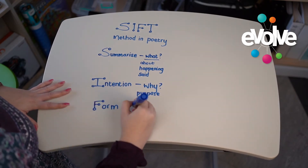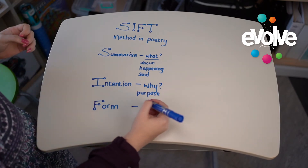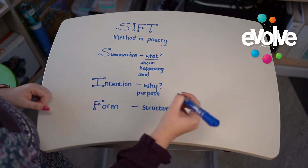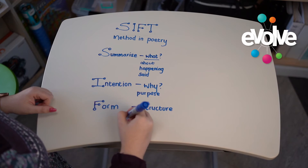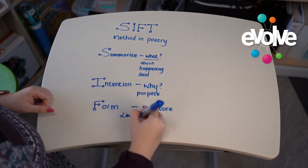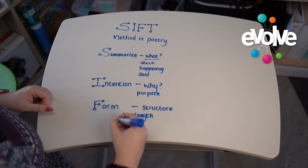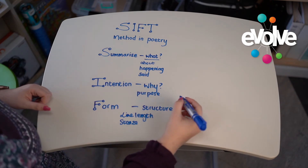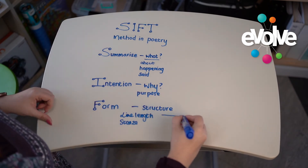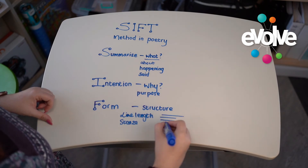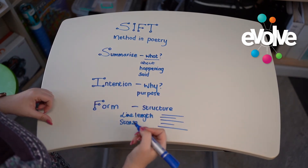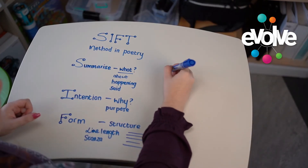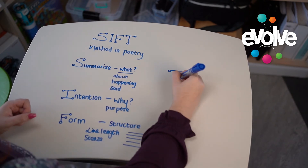The F stands for form. My step one when approaching a poem is to look at what it actually looks like — the structure. We look at our line lengths and our stanzas, as well as the general form. Some poems have different line arrangements that communicate something to us, which also adds to the form.